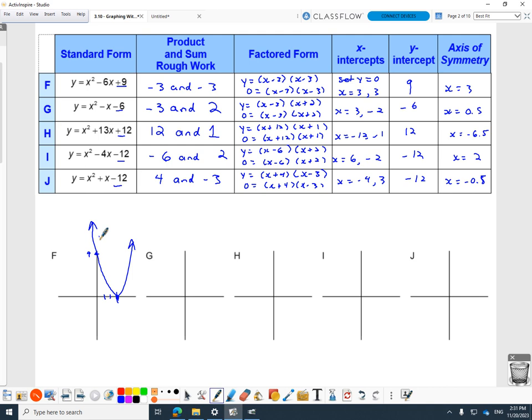Next one, x-intercepts three, negative two, y-intercept negative six, somewhere down about here.